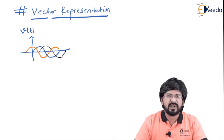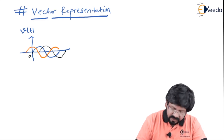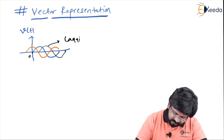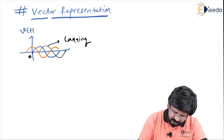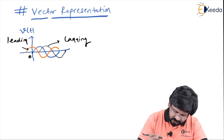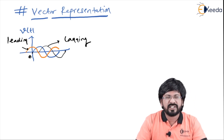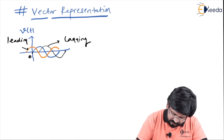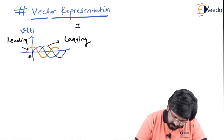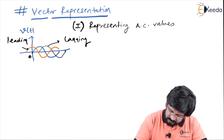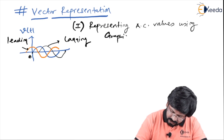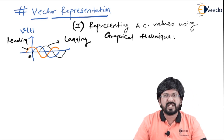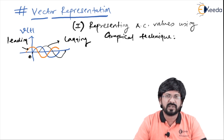As you can see, there are three types of AC values which I have drawn. All of them are not having the same phase. If I take this as a reference, then this is lagging, whereas if I take zero as a reference, this is leading. This means I can represent my vector values graphically. This is the first way of representing AC values using a graphical technique.